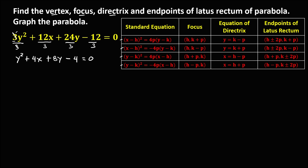Next, the variable with exponent 2 stays on the left side and the rest transpose to the right side. Since y is the variable with exponent 2, all y terms go on the left side. So we have y squared plus 8y, then equals negative 4x and positive 4 on the right side.